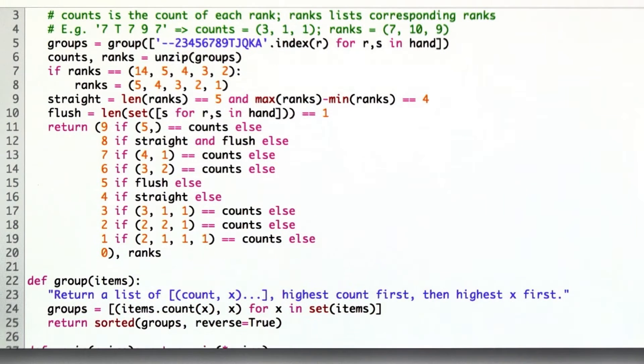Now let's scroll down and look at the group function. What group does is it takes a list of items and then returns a list of counts of items and the item itself.